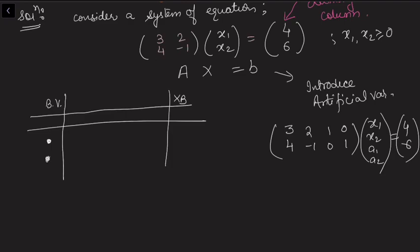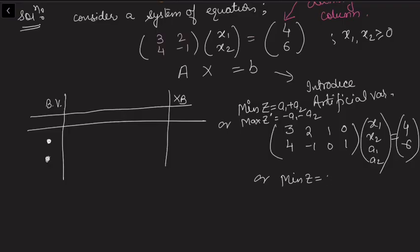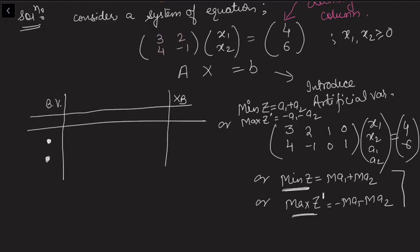Just as in the two-phase method or the Big-M method, once we introduce artificial variables there is an associated objective function. For the two-phase method we consider minimization of a1 + a2, or equivalently maximization of z' = −a1 − a2. For the Big-M method we consider minimization of z = M·a1 + M·a2, or maximization of z' = −M·a1 − M·a2.